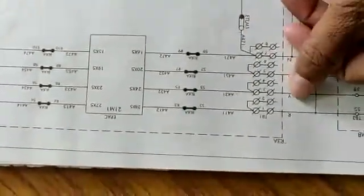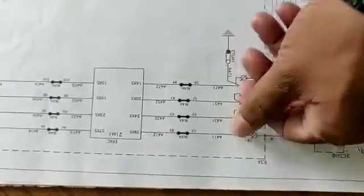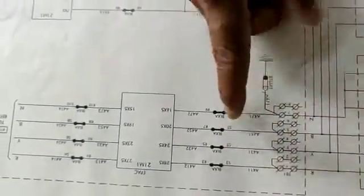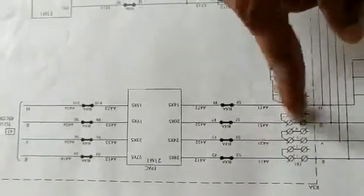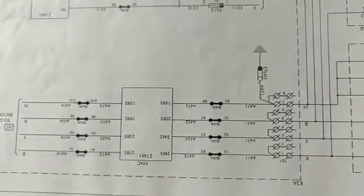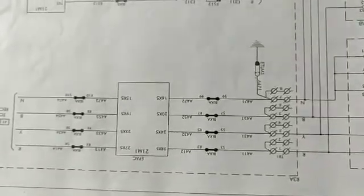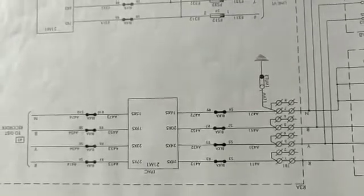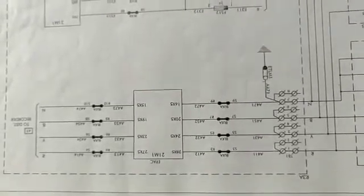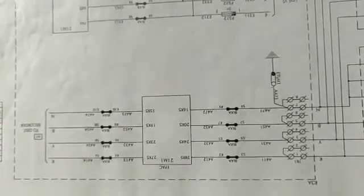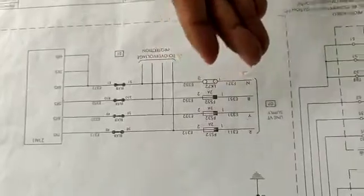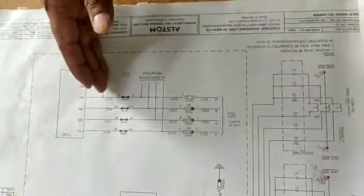CT wires are ferruled or designated starting with the letter A, followed by a number. The letter A indicates main protection — any ferrule starting with A is for main 1, main 2, transformer, or differential protection. A ferrule starting with B indicates backup protection. Ferrules starting with C or D are for metering or measurement purposes. If a ferrule starts with E, it is for CVT or voltage circuits. We will see in later sessions how CVTs are connected inside the relays.